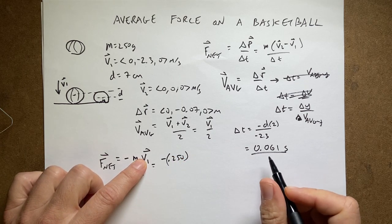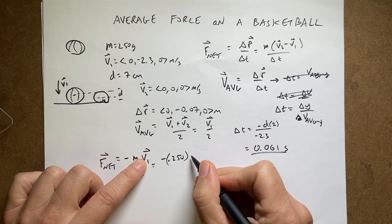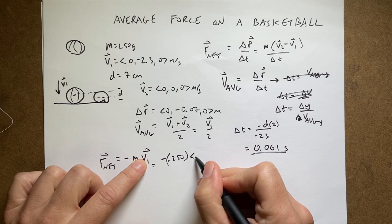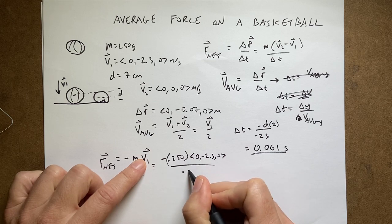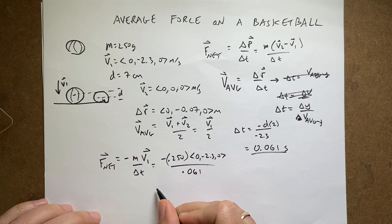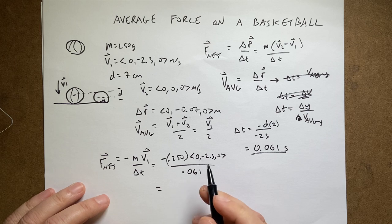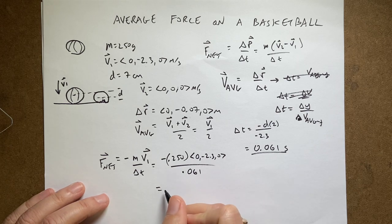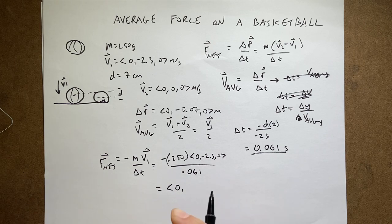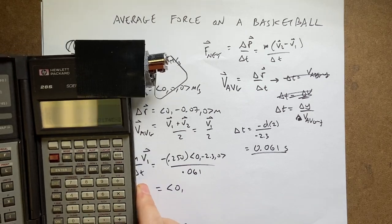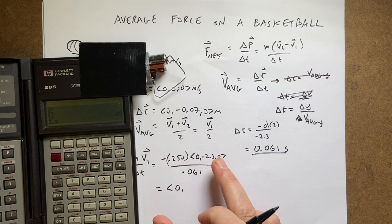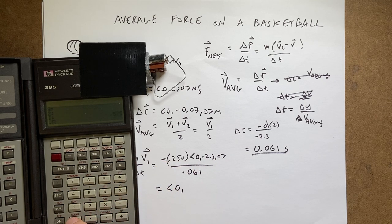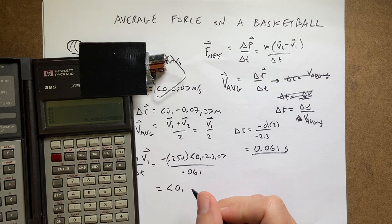So I get negative m v1 over delta t. So that's going to be negative 0.25 kilograms times v1, which is zero negative 2.30, divided by 0.061. So let's put this, the only thing that's going to survive is the x component, so I get zero for the y component. The y component I get 0.25.